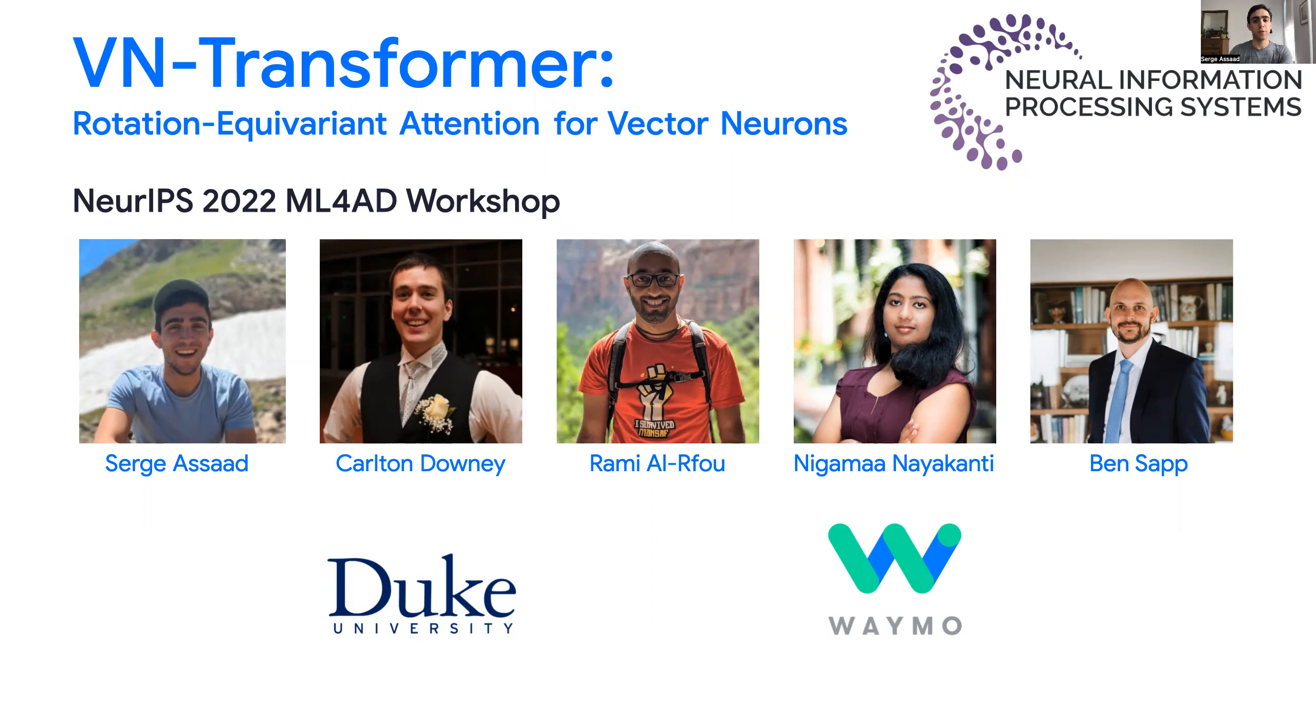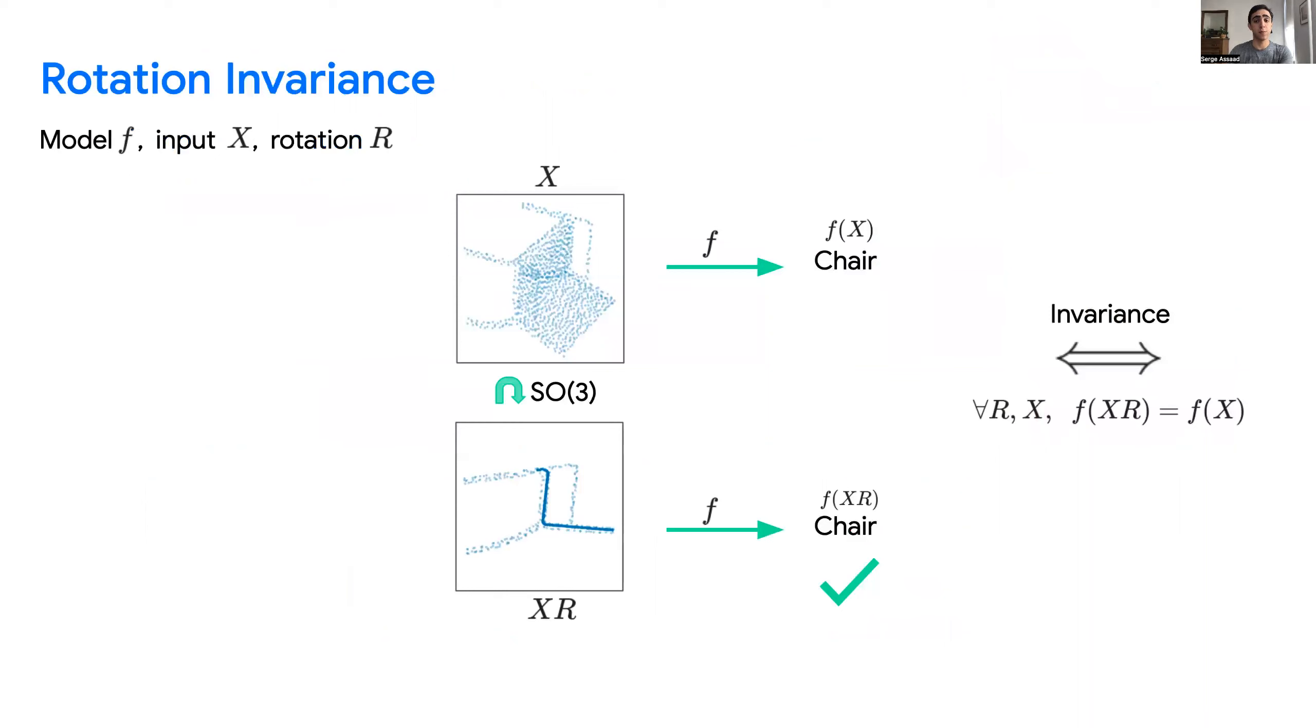Hi, everyone. Today, I'm going to talk about our work called VN Transformer. For perception tasks in autonomous driving, we want our models to not change their predictions when the input is rotated. This property is known as rotation invariance.